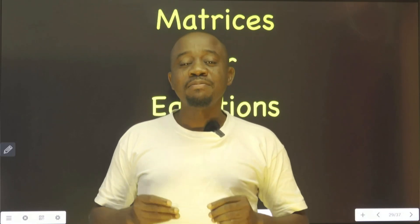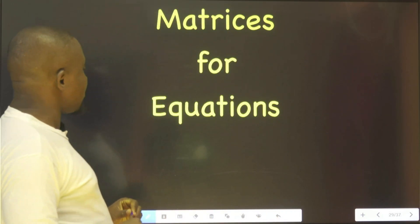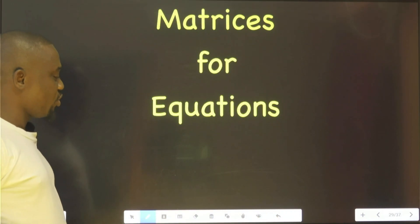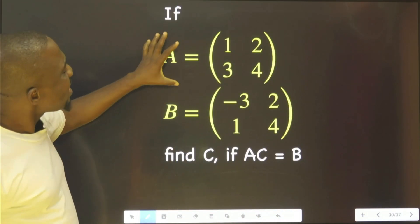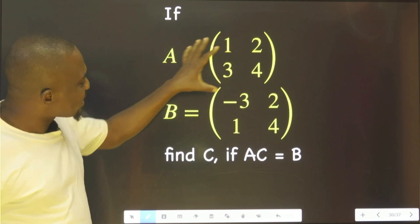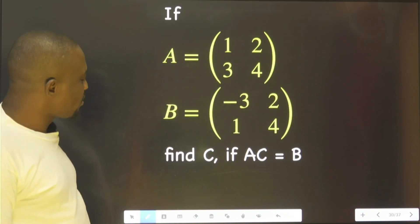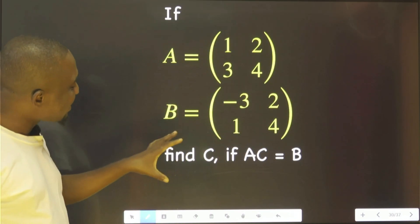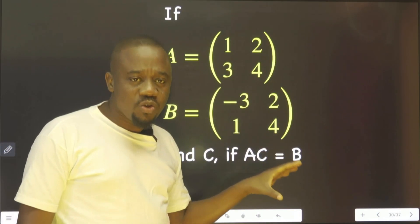Alright, in this class we're going to look at matrices equations. If A is equal to this and B is equal to this, we should find C if AC is equal to B.